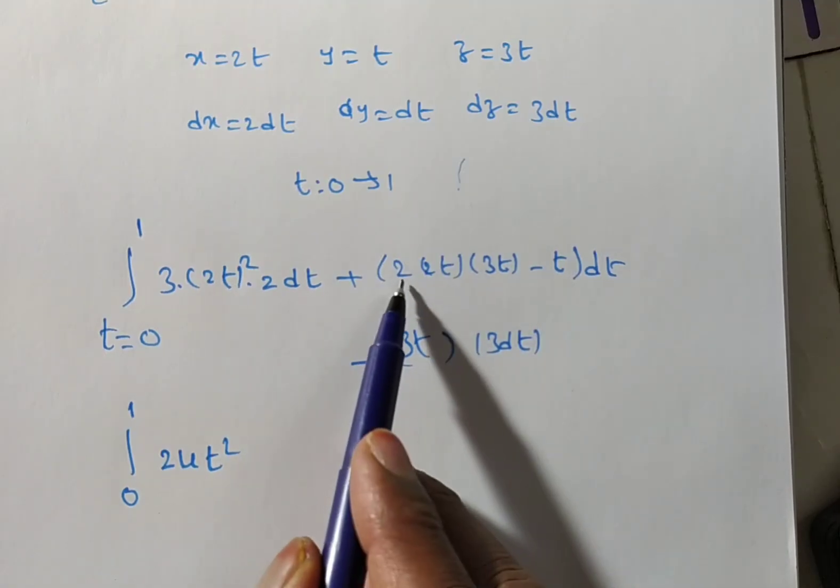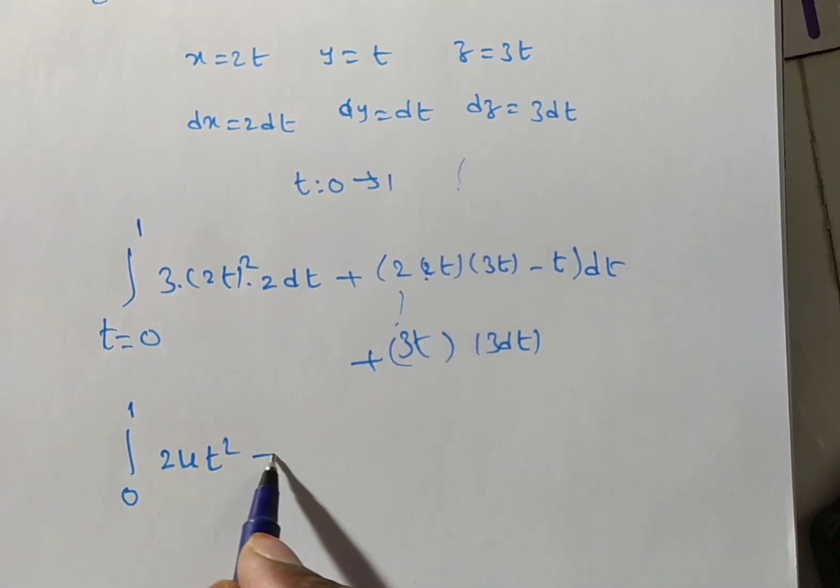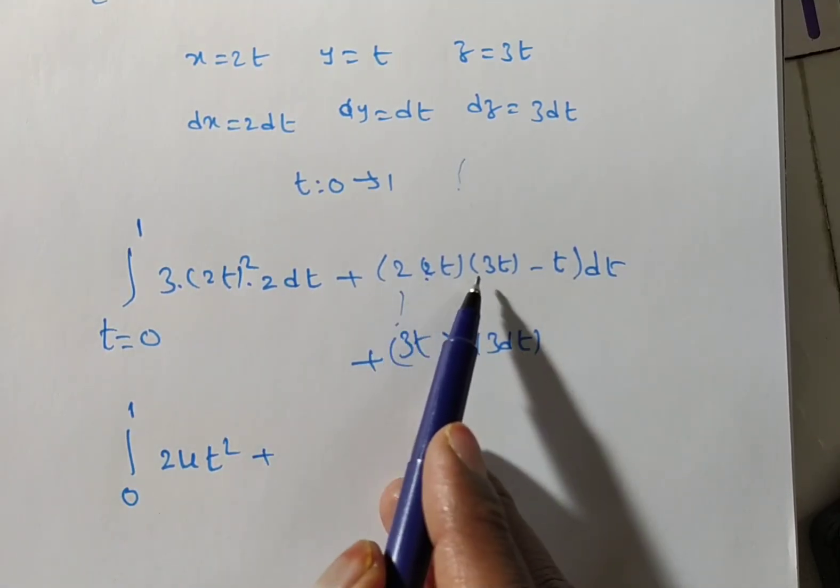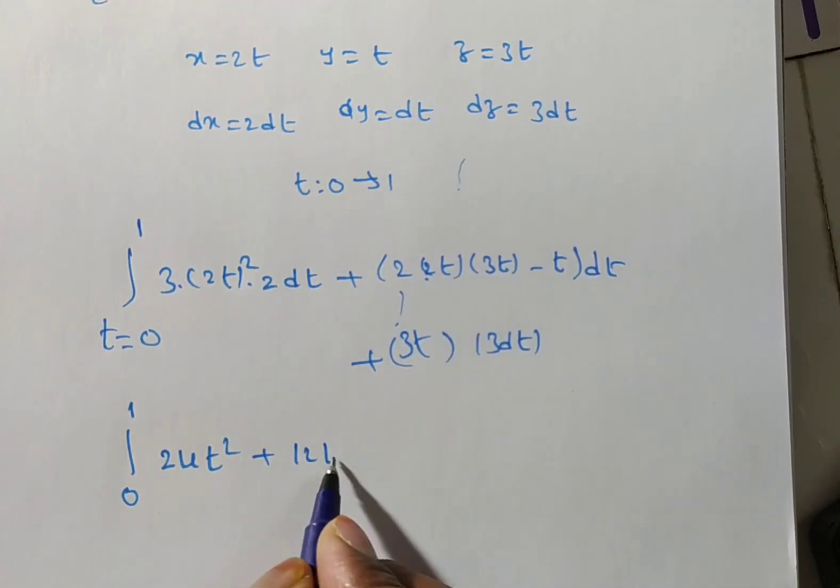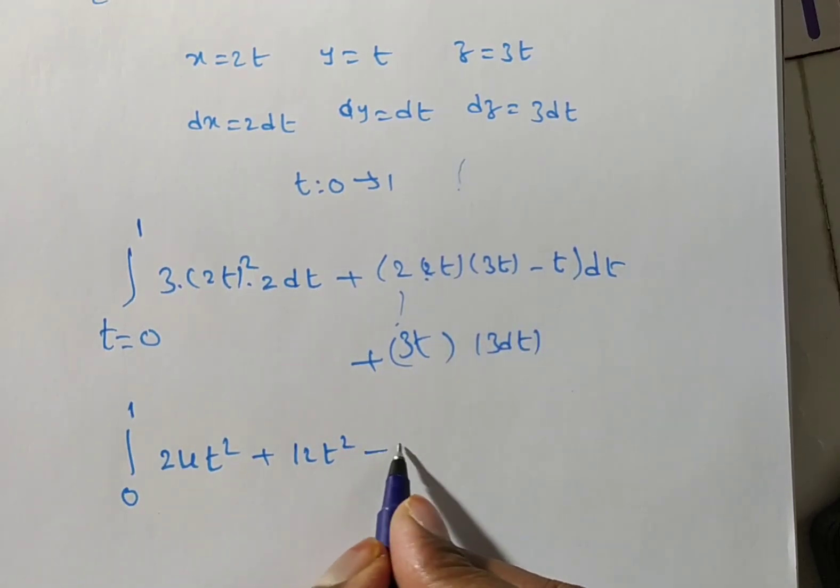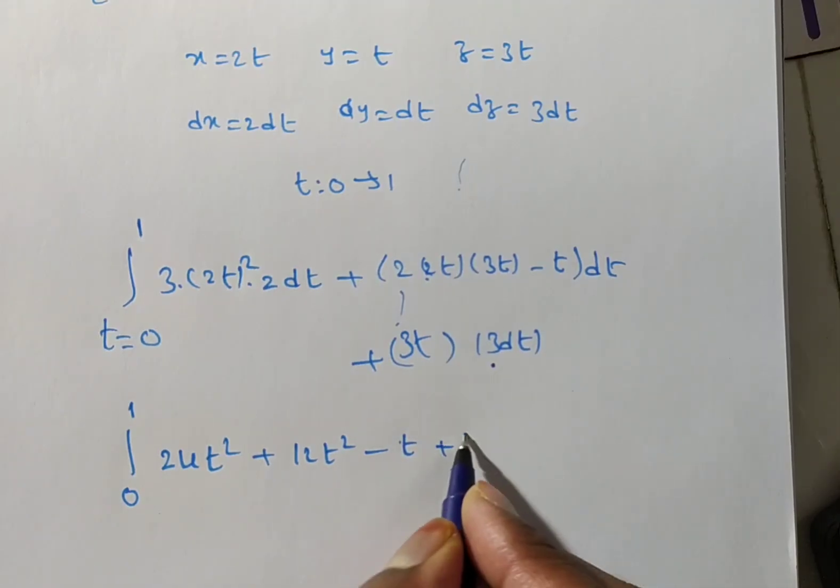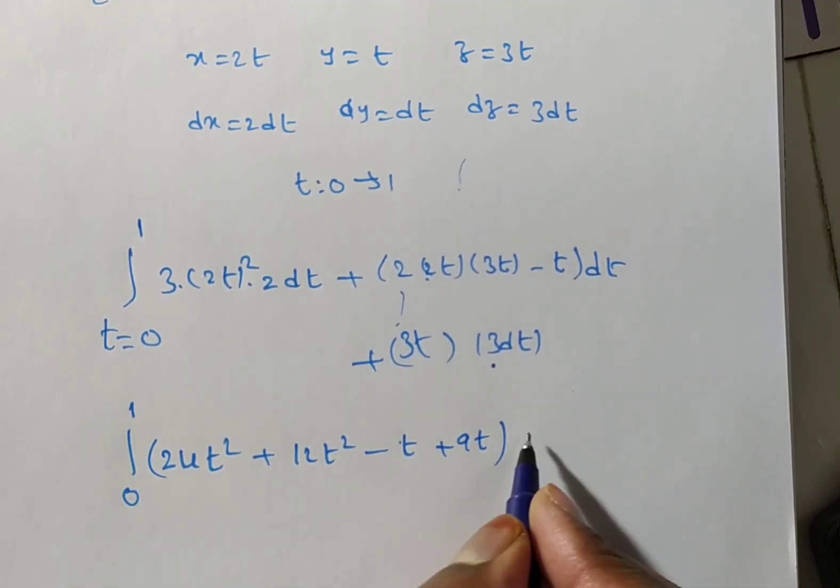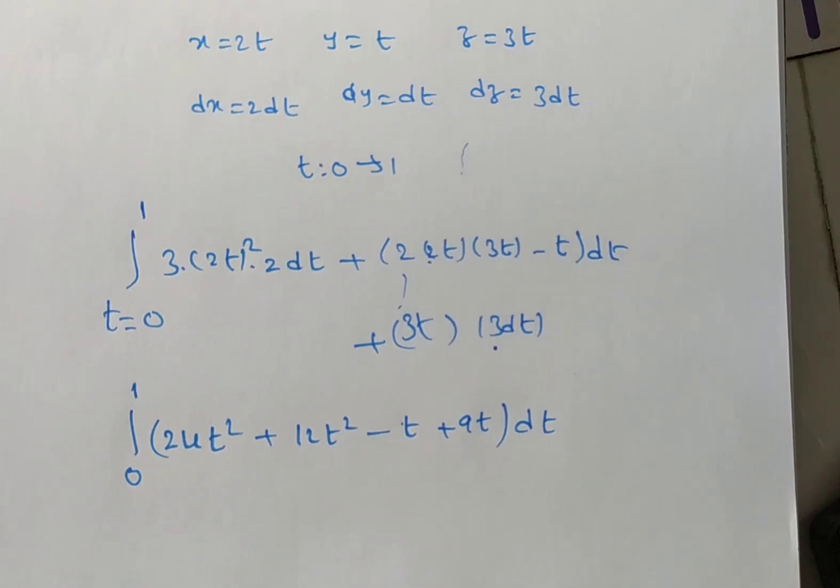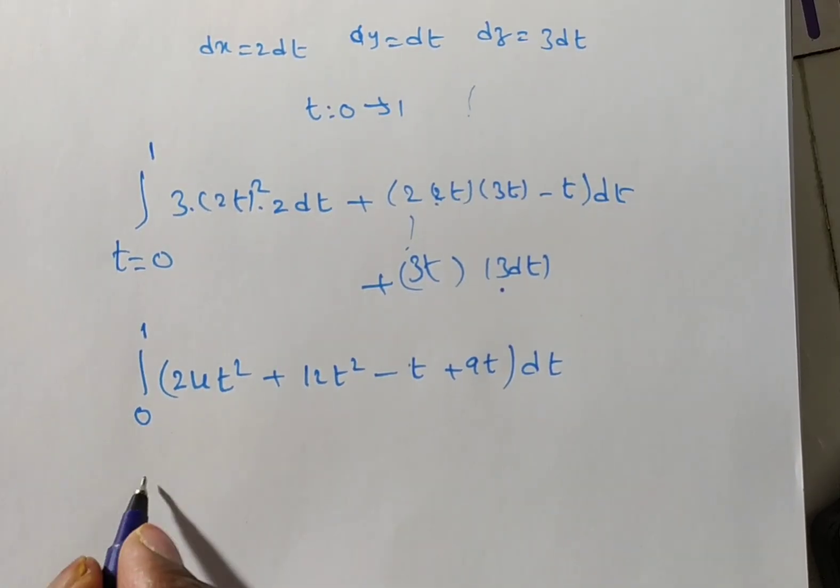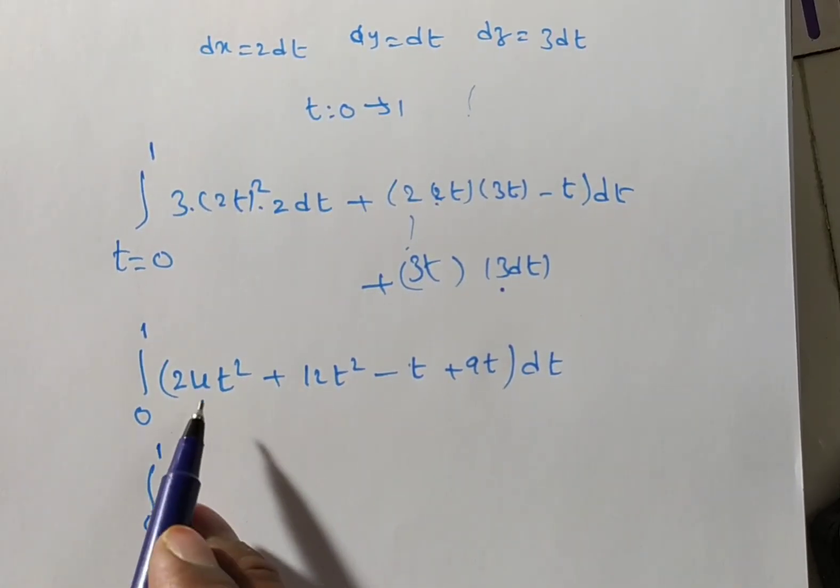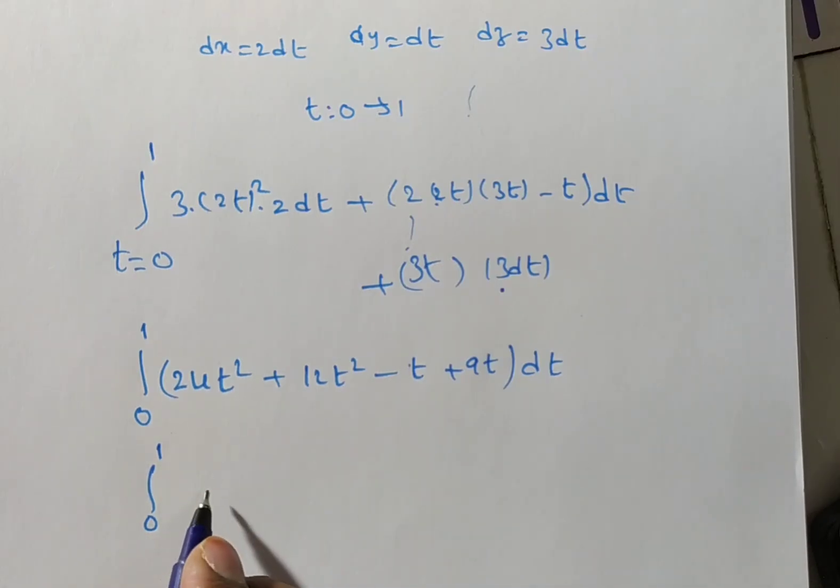Next, multiply inside. 2, 2s are 4. This is plus. 2, 2s are 4, 4, 3s are 12. So, 12t square. Plus into minus, minus t. Next, 3, 3s are 9t into dt. So, again you simplify if there is any common term, addition or subtraction we have to do. So, 24t square plus 12t square is nothing but 36t square minus t plus 9t is nothing but plus 8t into dt.